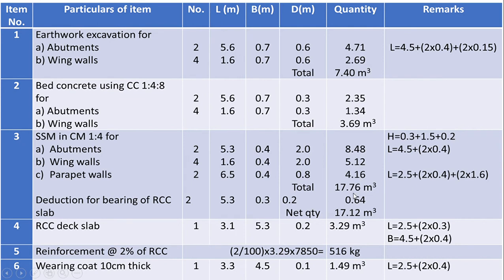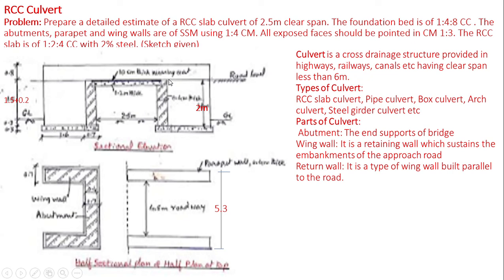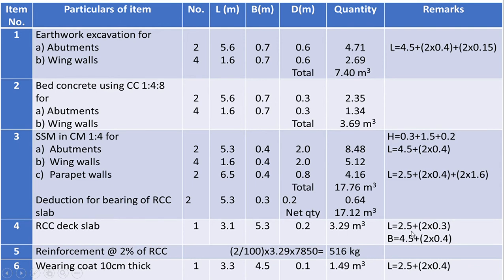Total size stone masonry for abutments, wing walls, and parapet together is 17.76 cubic meters. From this, deduct the deck slab bearing part at the top of the abutment. The bearing length equals the length of the abutment, the width of bearing for the deck slab on abutment is 0.3 meters, and the thickness of slab inside masonry is 0.2 meters. Deduction quantity is 0.64 cubic meters, giving a net quantity of size stone masonry of 17.12 cubic meters.